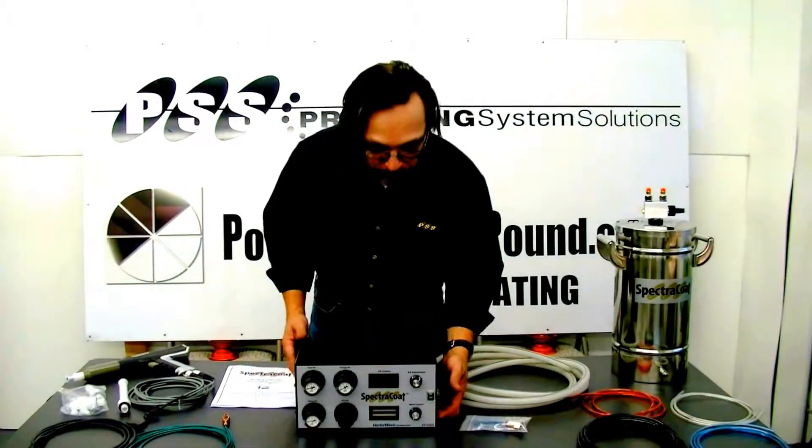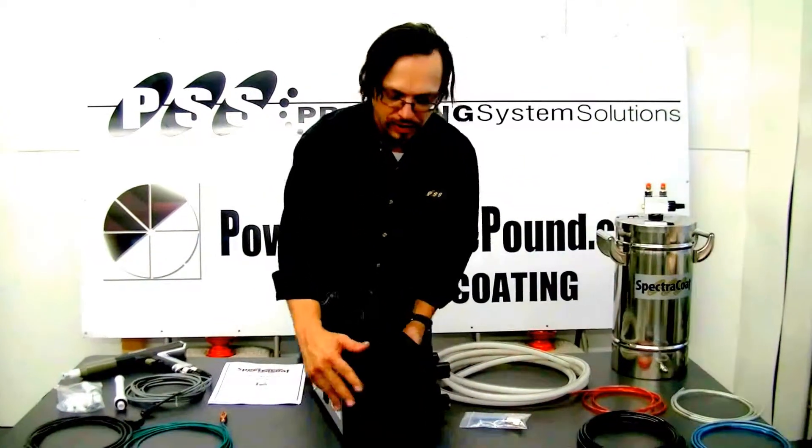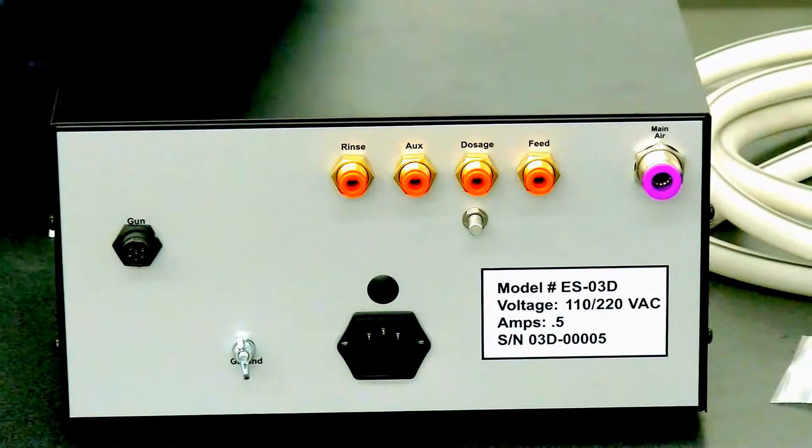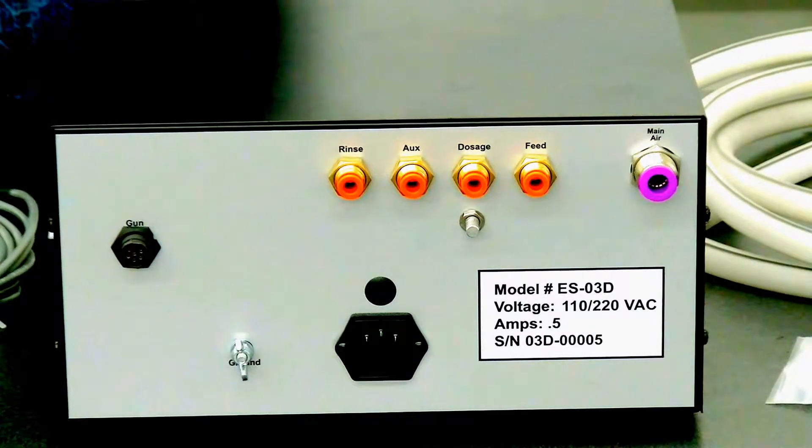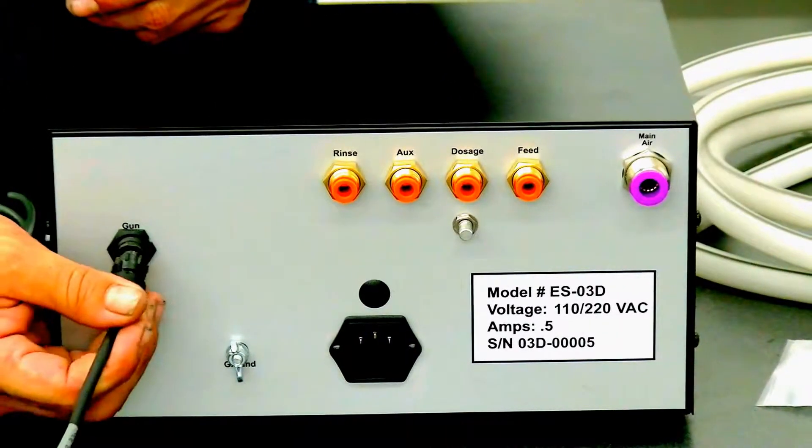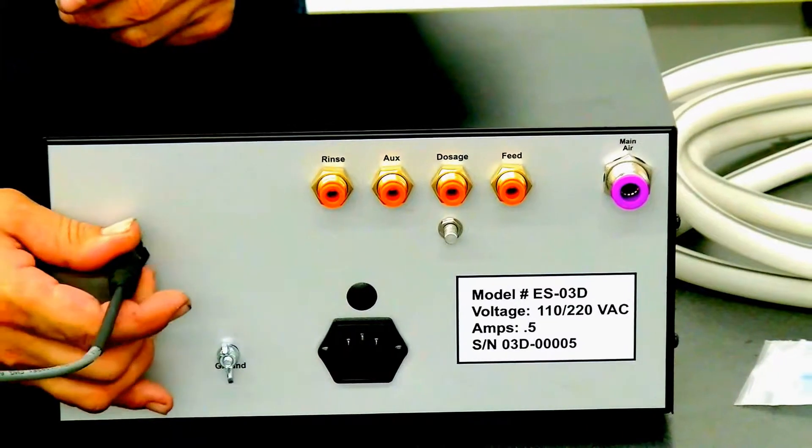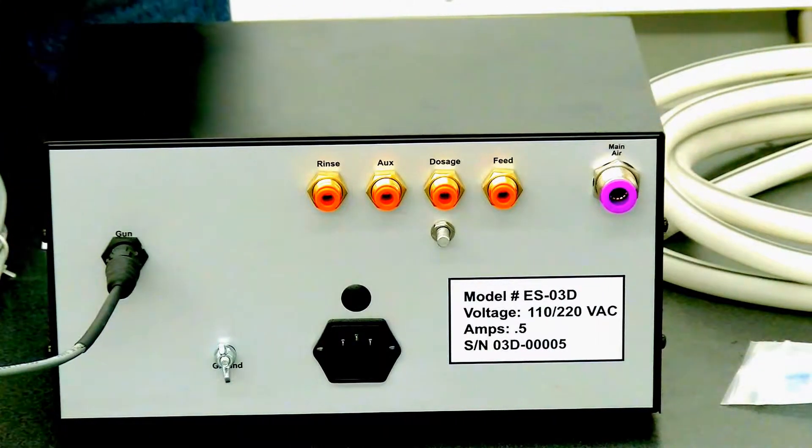Now we're going to turn our ESO3DD controller around so that we can see the back because that's where all of our connections go. First, we'll take and connect our gun. We're going to first hook the electrical of it up and then we'll hook our airlines in later as we hook up all our airlines. The electrical portion that does your trigger and all your solenoid work goes right here where it says gun. Just leave this gun right here for right now.